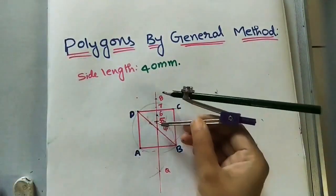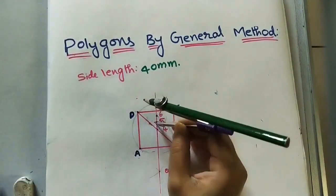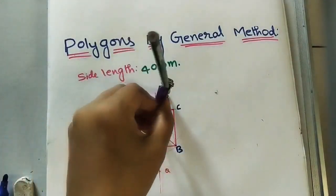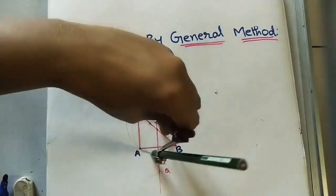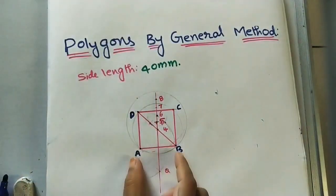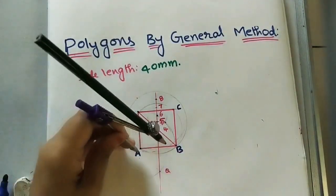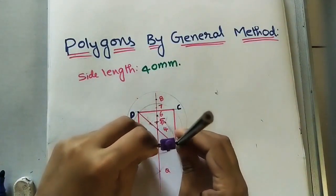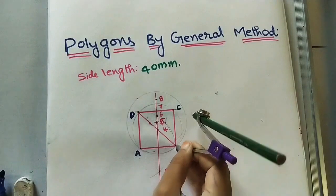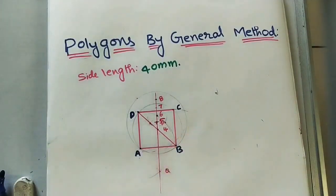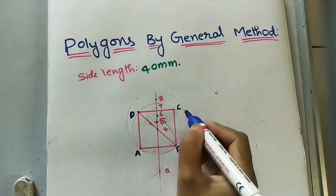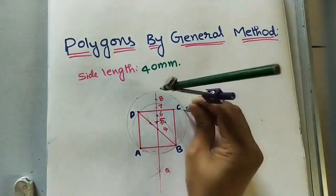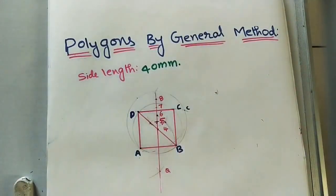Now for the pentagon, take 5 as center with 5A as radius and draw another circle passing through A and B, since AB is one side of the pentagon. Divide this circle into five equal parts — the points are A, B, C, D, and E.